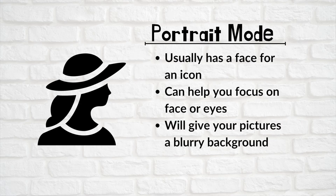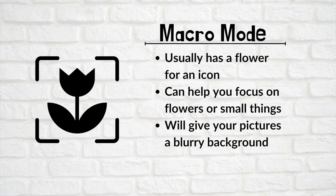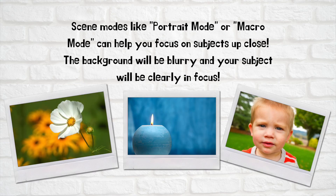You might have a portrait mode where your camera will look for faces or eyes and focus on that. You might have a macro mode, which is usually like a little flower, and that will tell your camera you're trying to take pictures of floral things or small things. Both the portrait mode and the macro mode will give you a blurry background when you're focusing on your subjects.